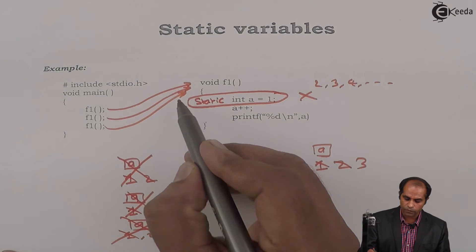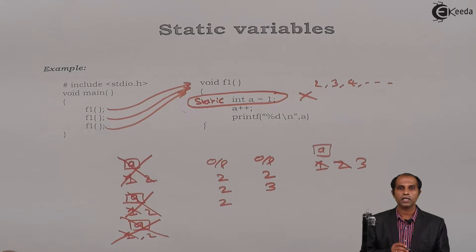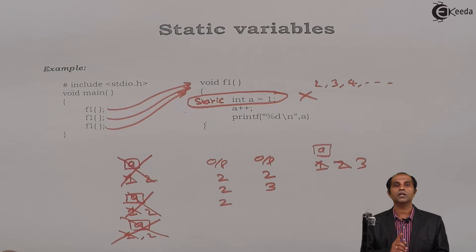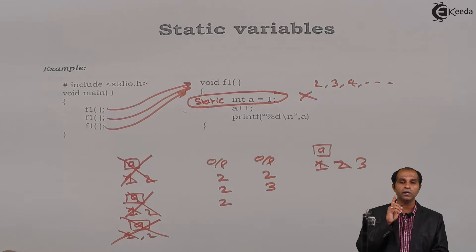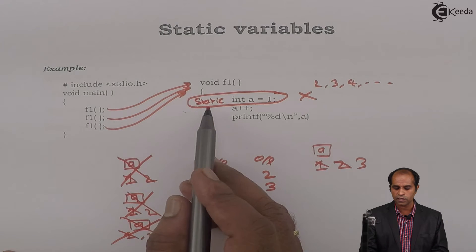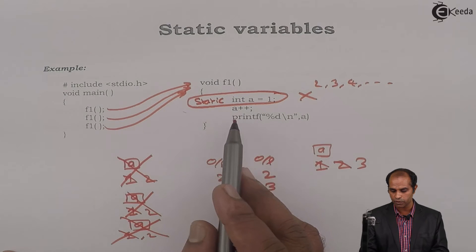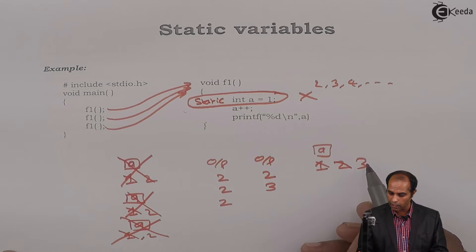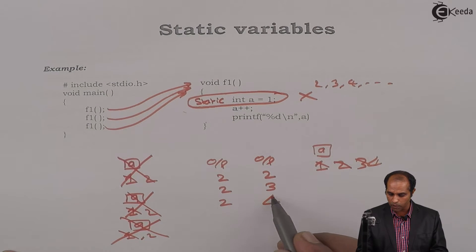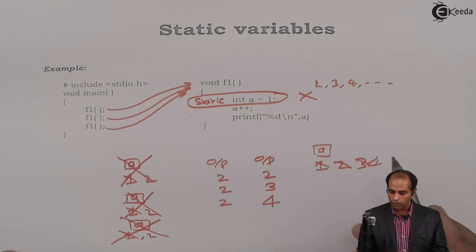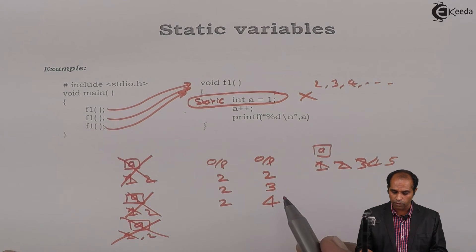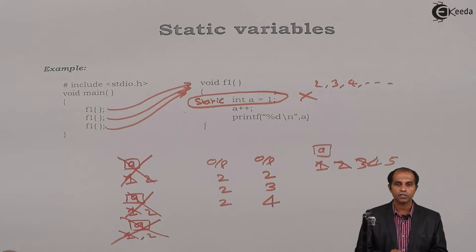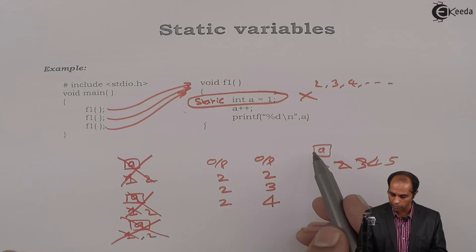F1 is called for the third time. Again, the static declaration will not work because static declarations are executed only once when the function is called for the first time. So directly A++ executes — A was 3, it is modified to 4, and the output displayed is 4. After that, A++ would make it 5 when called again. The variable is not destroyed at the end of the function; only when the program ends is the variable destroyed.